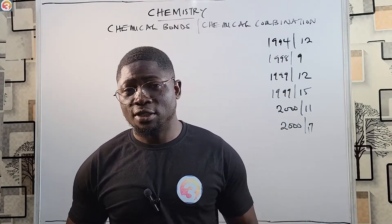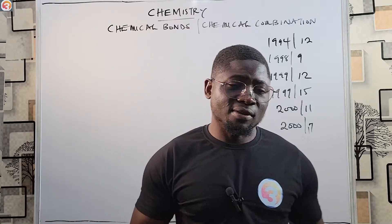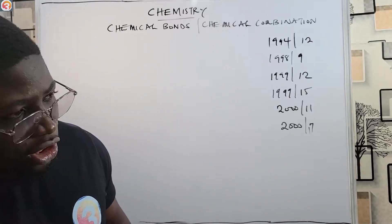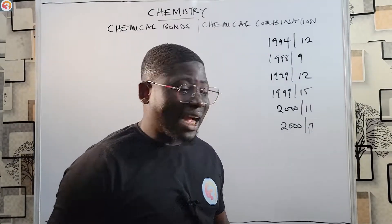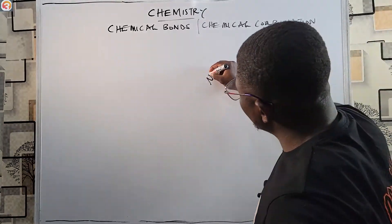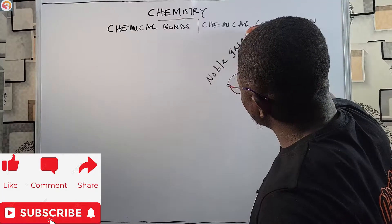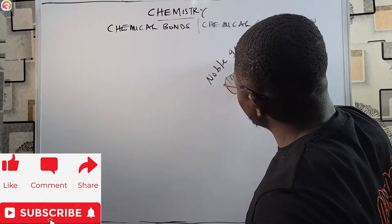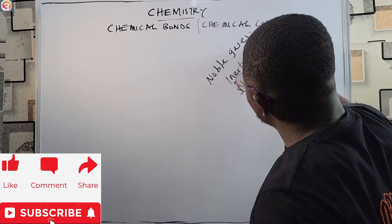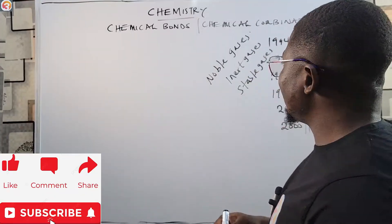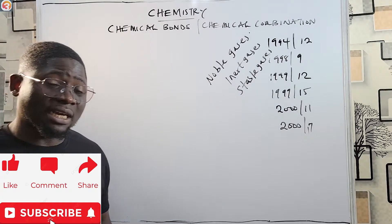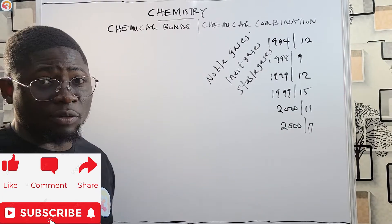This first topic is an introduction to chemical bonds and chemical combination. The outermost electrons of noble gases — the ones we call the inert gases or stable gases — belong to group zero of the periodic table.